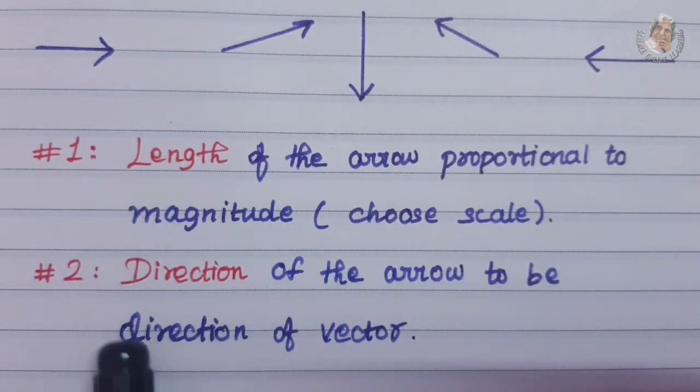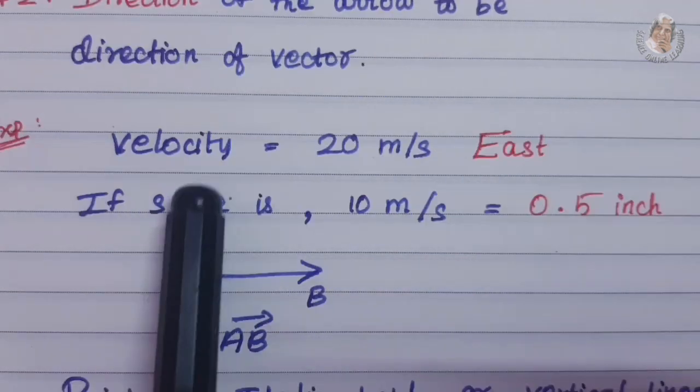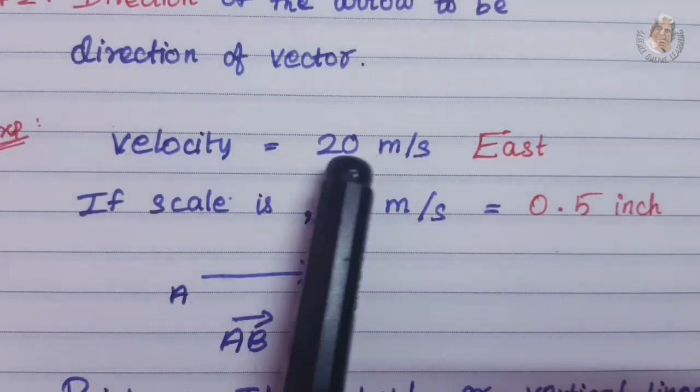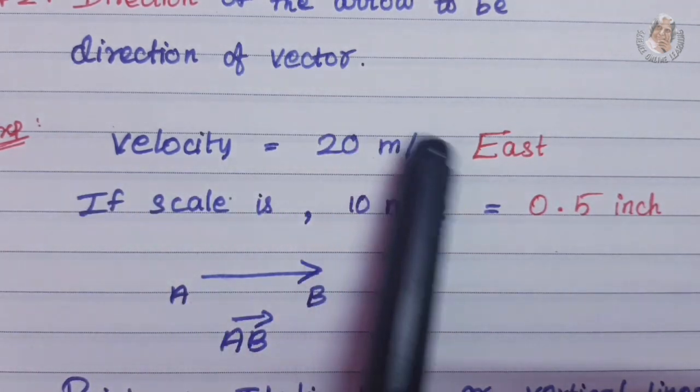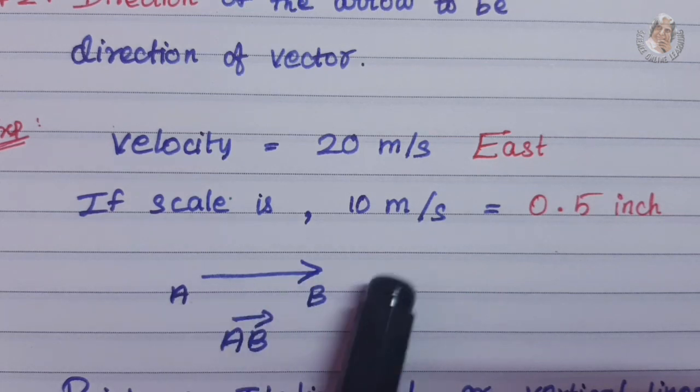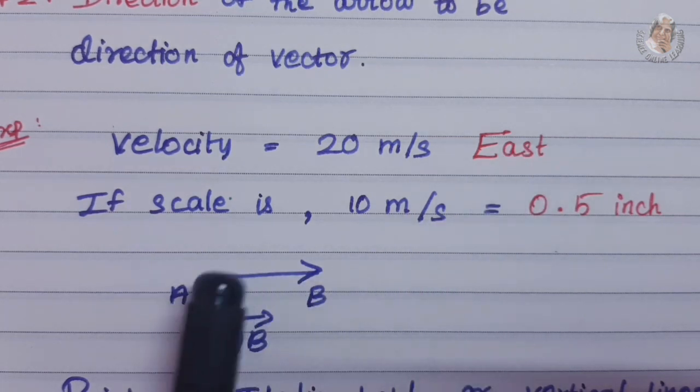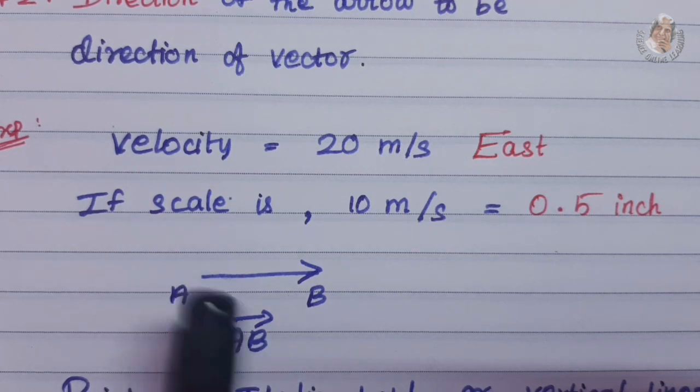The vector quantity is the direction. Now let's look at the direction. For example, there is a velocity of 20 meters per second. One object is 20 meters per second east side. So this is a vector quantity.